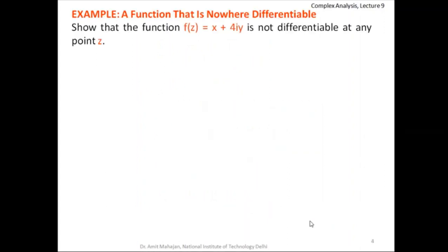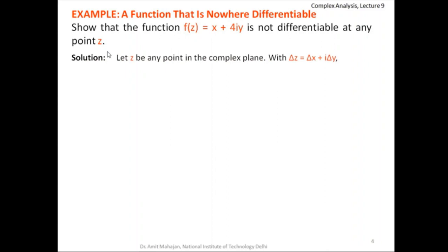There is a possibility that the derivative may not exist anywhere. We'll take one example to show a function which is nowhere differentiable — the derivative does not exist at any point z. Let f(z) = x + 4iy. We'll show that this function is not differentiable at any point z. To prove this, we just need to show that there are two different paths for which the limits are different.